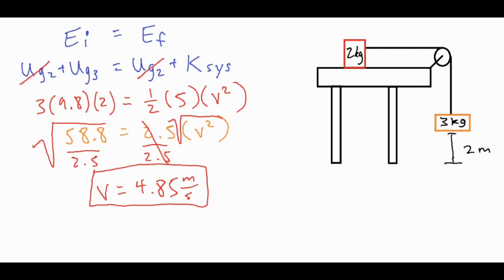We plugged in three times 9.8 times two for the initial gravitational potential energy of the three kilogram block. That lost energy got transferred into kinetic energy so the system remains at a constant total. We have one half of five kilograms times v squared. Dividing both sides by 2.5 and taking the square root, we get a velocity of 4.85 meters per second — higher than the first problem because this system has less resistance than that vertical pulley.